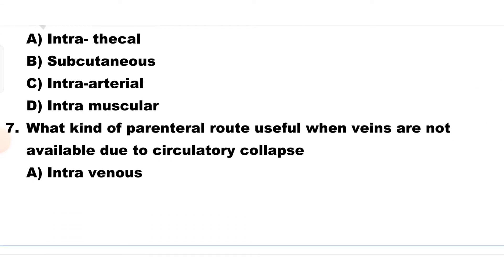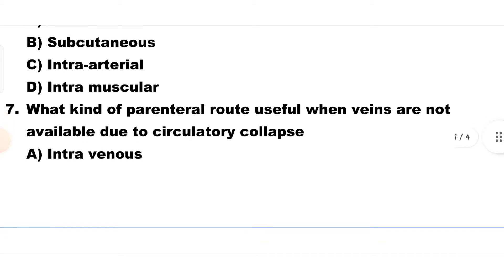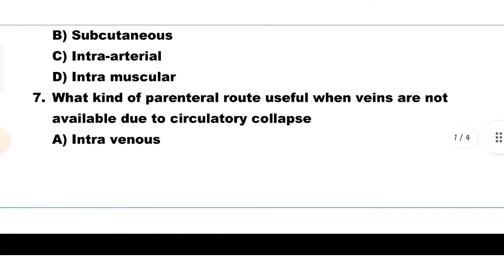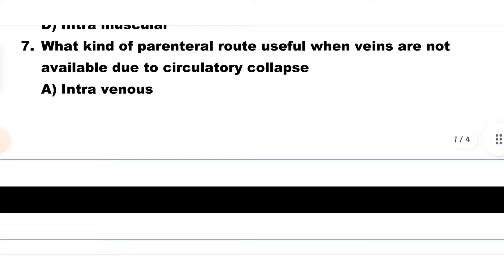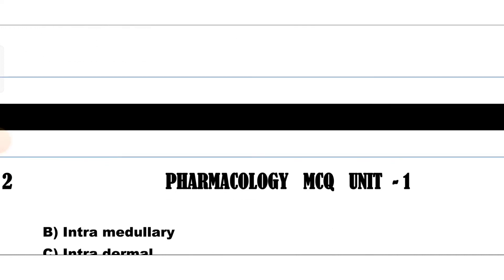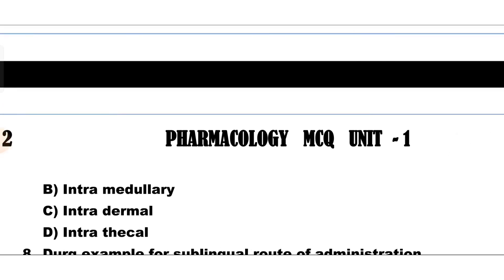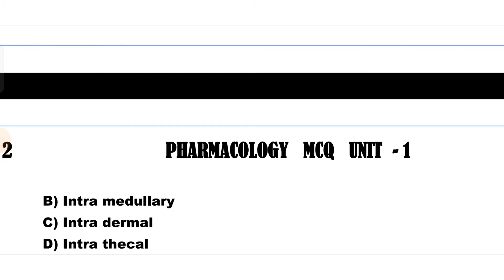Question number 7. What kind of parenteral route is useful when veins are not available due to circulatory collapse? In this situation, the answer is Option B, intramedullary.